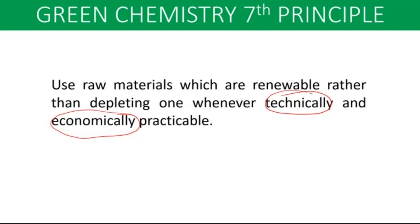Similarly, suppose you have a raw material A, and using A is having some adverse environmental effect. You find a greener ingredient B that fulfills the purpose of A and is comparatively greener in nature. But if you are not trying to replace A in your process or project, then it is not technically practicable. If you replace A with B, only then it would be called technically practicable.